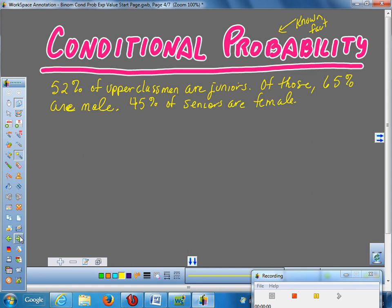To work these kind of problems, we made probability trees. So, this is just the starting information. I'm telling you, 52% of upper classmen are juniors. Of those, 65% are male. 45% of seniors are female. How would I draw a probability tree of that?